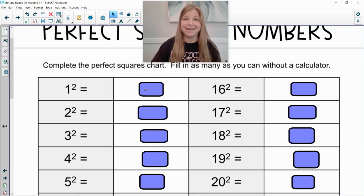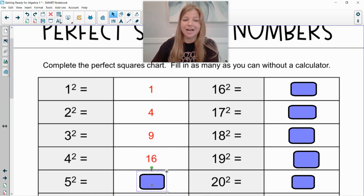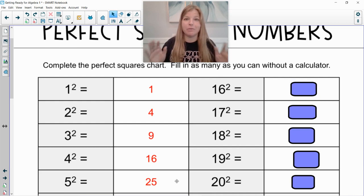Okay 1 squared, that's easy. 1 squared is 1. 1 times 1 is 1. 2 times 2 is 4. 3 times 3 is 9. 4 times 4 is 16. 5 times 5 is 25. Right so those are our first 5: 1, 4, 9, 16, 25. Easy, easy, easy.